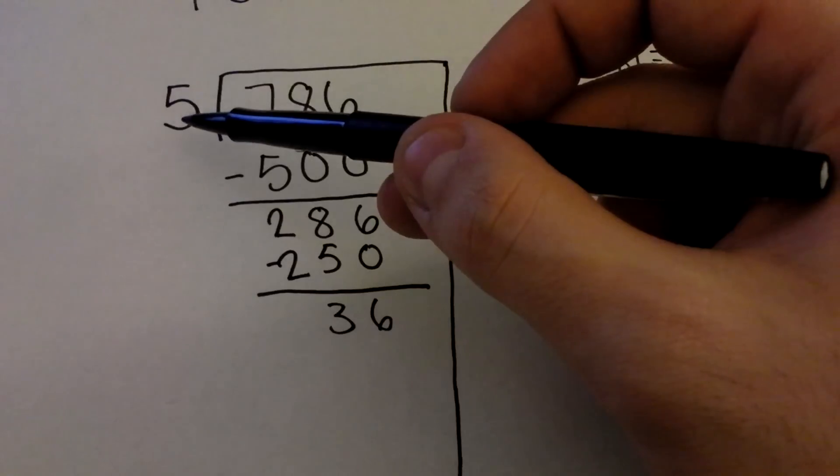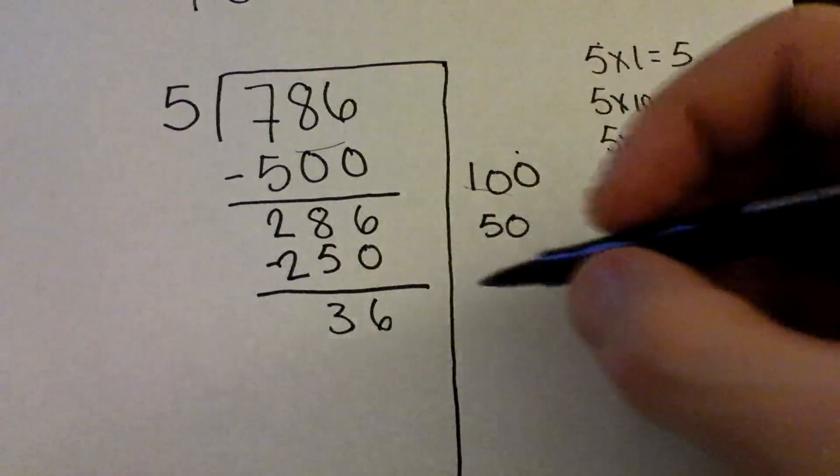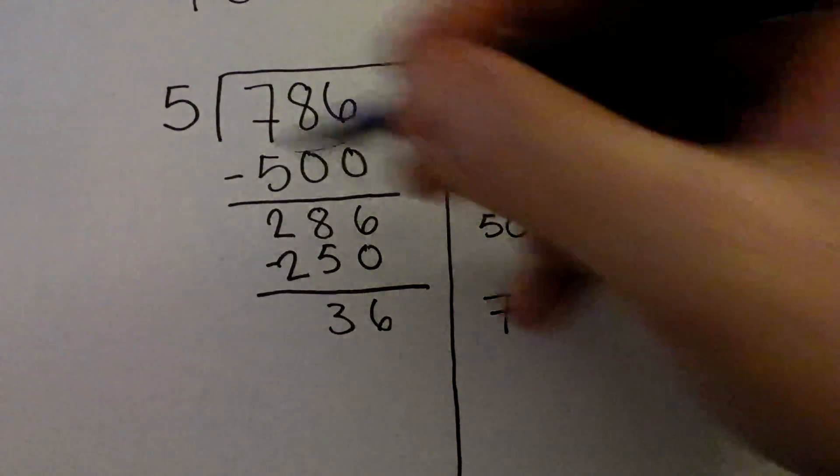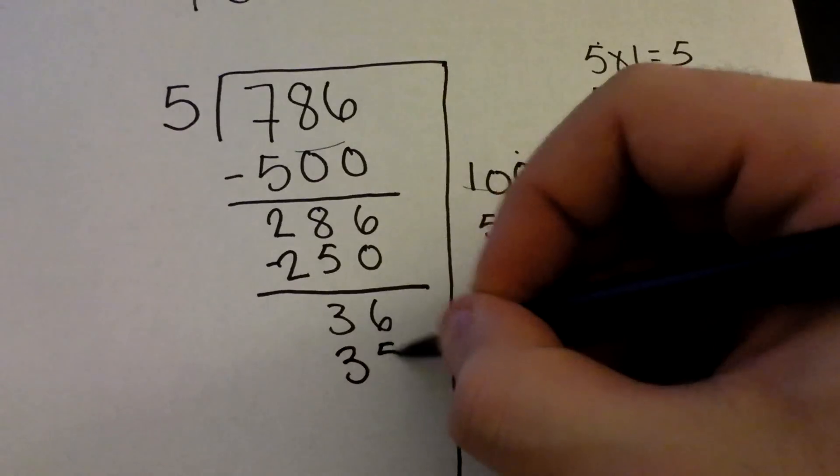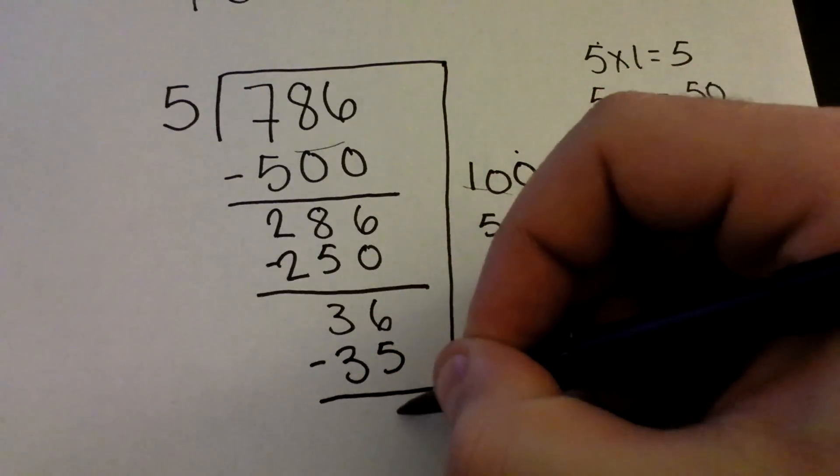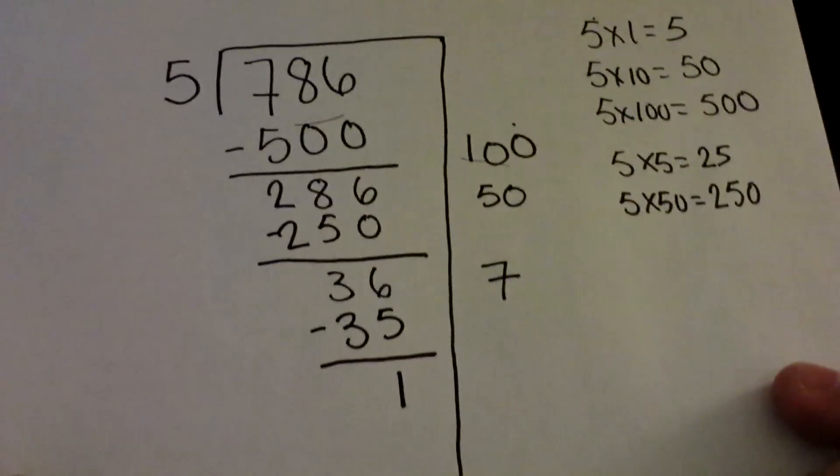Well, here's a basic multiplication fact. We know that 5 times 7 equals 35. And when we subtract, we're left with 1.